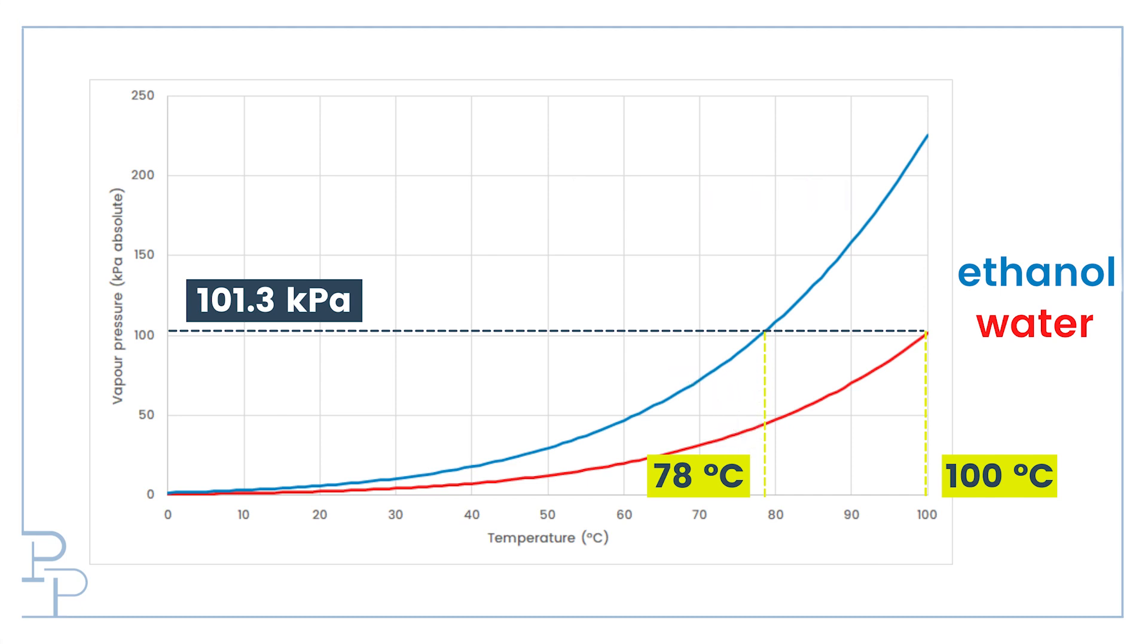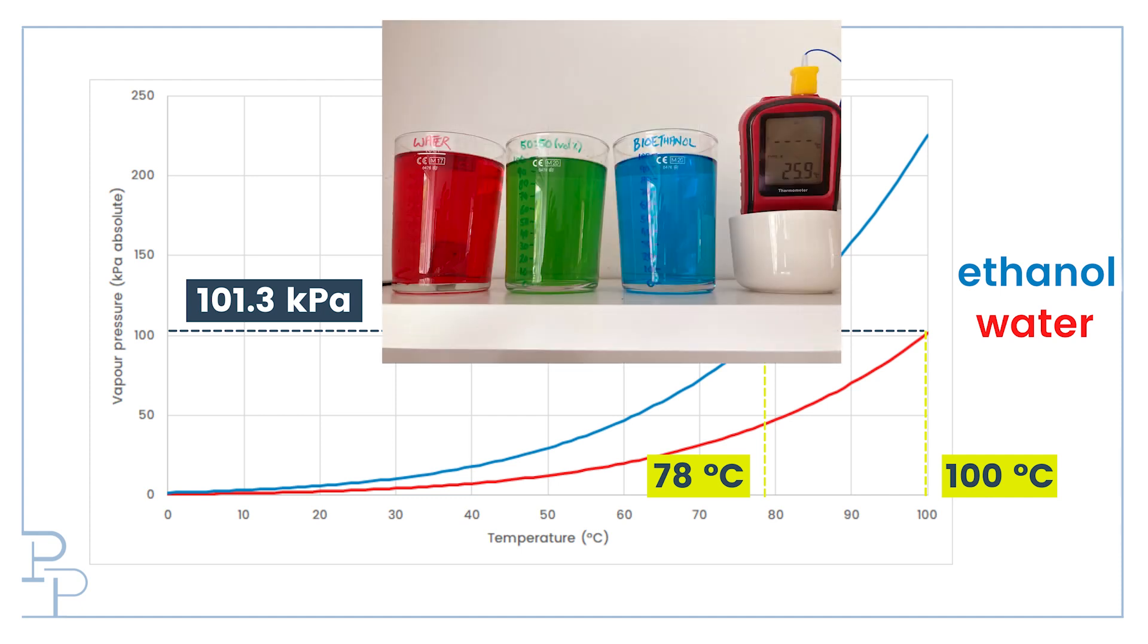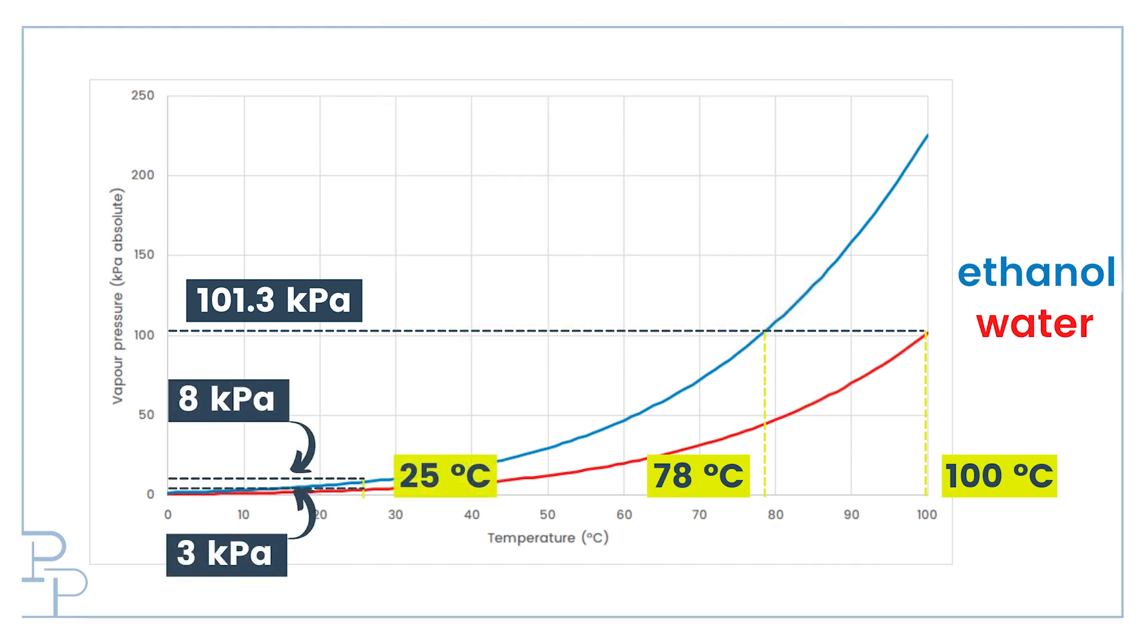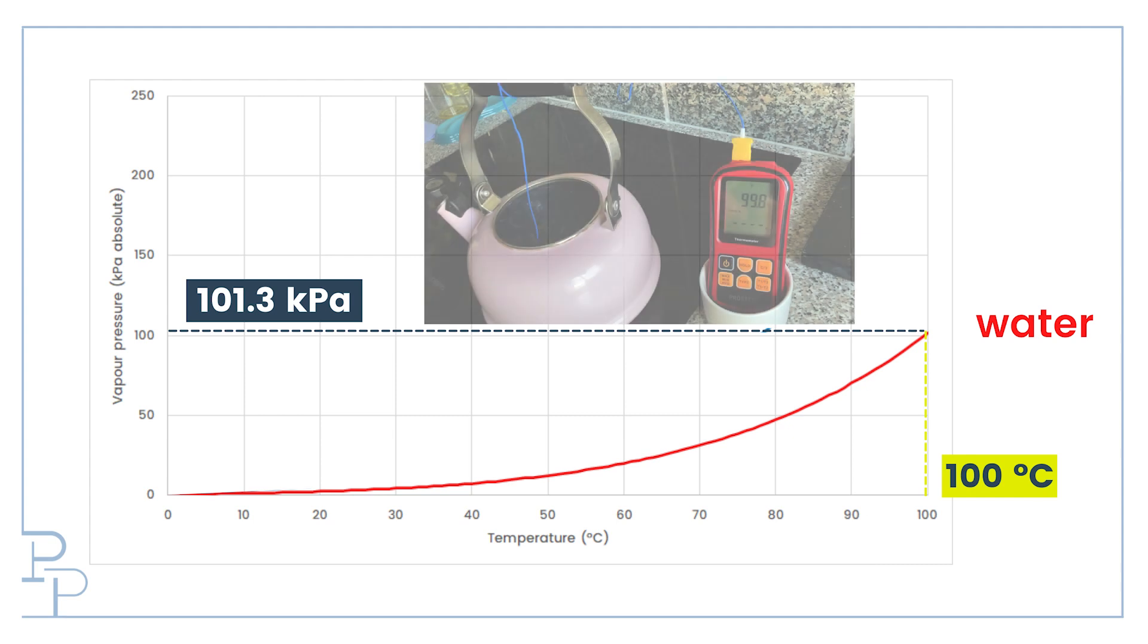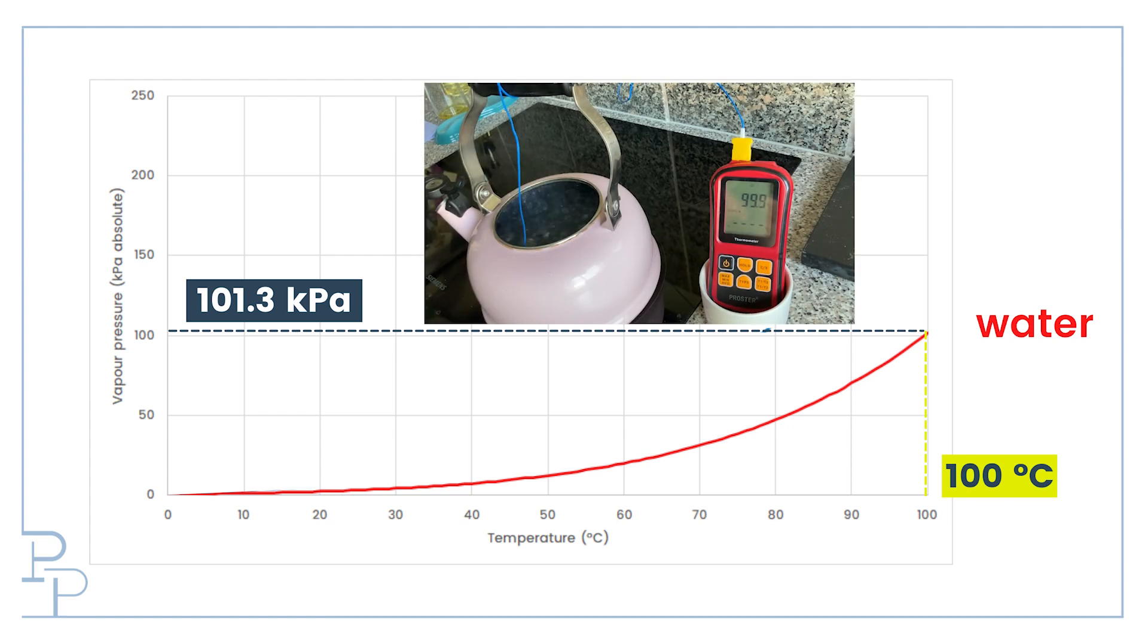So liquids can evaporate even if they are below their boiling points, and that's because they have vapor pressure. While I was taking the photos around 25 degrees, the vapor pressure of the water was around 3 kilopascals, while the ethanol's vapor pressure was around 8. Boiling is simply the special condition reached when a liquid is heated enough so that its vapor pressure equals the atmospheric pressure to which it is exposed.